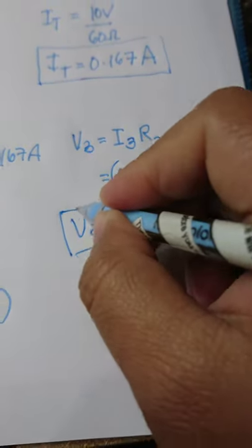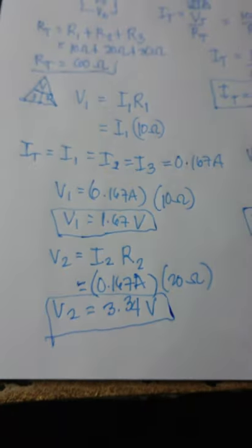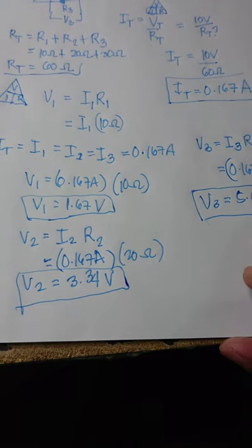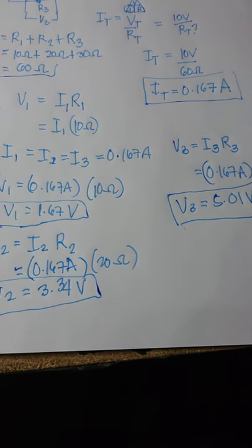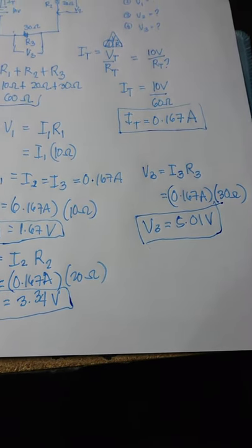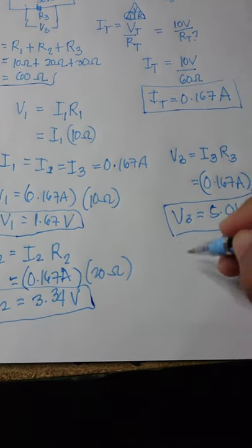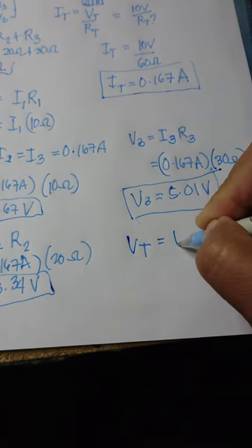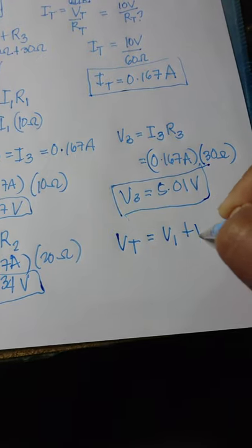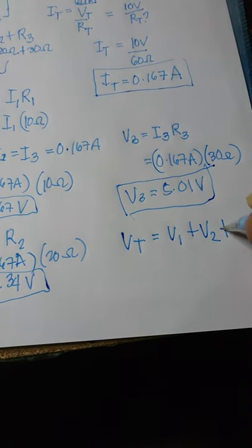So how to check if your answers are correct? We apply the rule of series circuit for voltage. It states that the total voltage is equal to the individual voltage drop in each resistor.